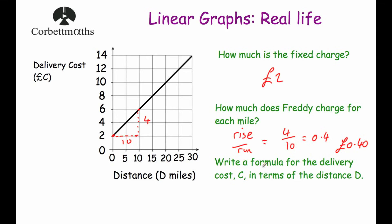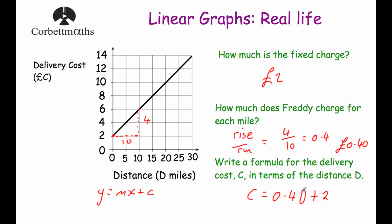The last question says: write down a formula for the delivery cost C in terms of the distance D. That's the equation of the line. The equation of a line is normally y equals mx plus c, where m is the gradient and c is the y-intercept. Here, our vertical axis is C, the gradient m is 0.4, and x is the horizontal axis D. Plus our y-intercept of 2. So the equation of this line is C equals 0.4D plus 2 — the cost equals 0.4 times the distance in miles plus £2.